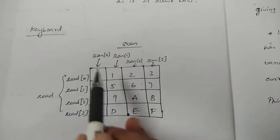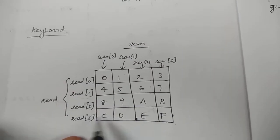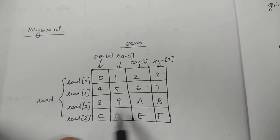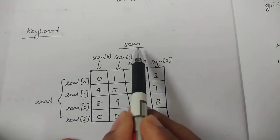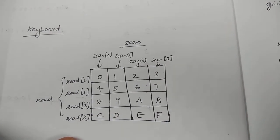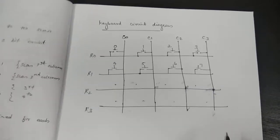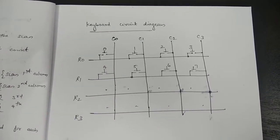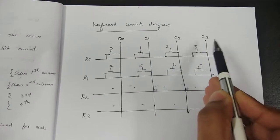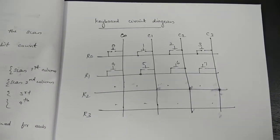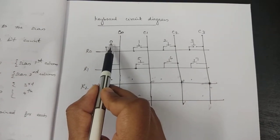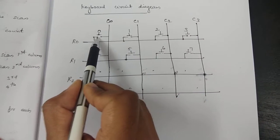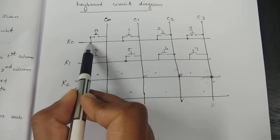The keyboard is a four-by-four matrix with keys zero through f. We use two variables called 'scan' and 'read' for scanning the keyboard. The internal structure is a push-button matrix with columns c0 through c3 and corresponding rows. The columns are scanned using the scan input and the rows are read using the read signal.